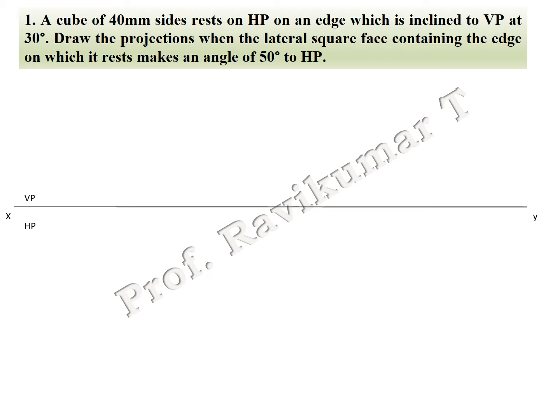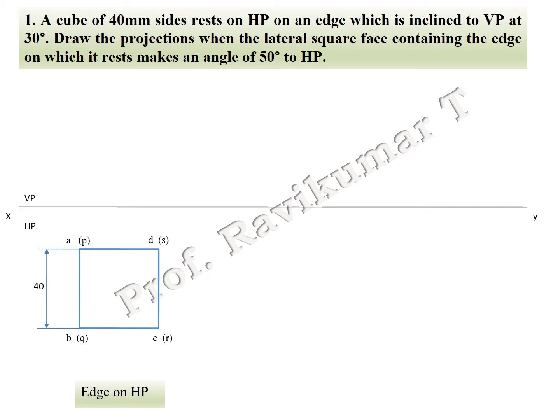First, we have to construct its edge condition. Since a cube looks like a square from the top, we construct a square for the edge condition. All sides are 40 mm. This cube has a top face and a bottom face. The top face is named A, B, C, D and the bottom face is named P, Q, R, S.